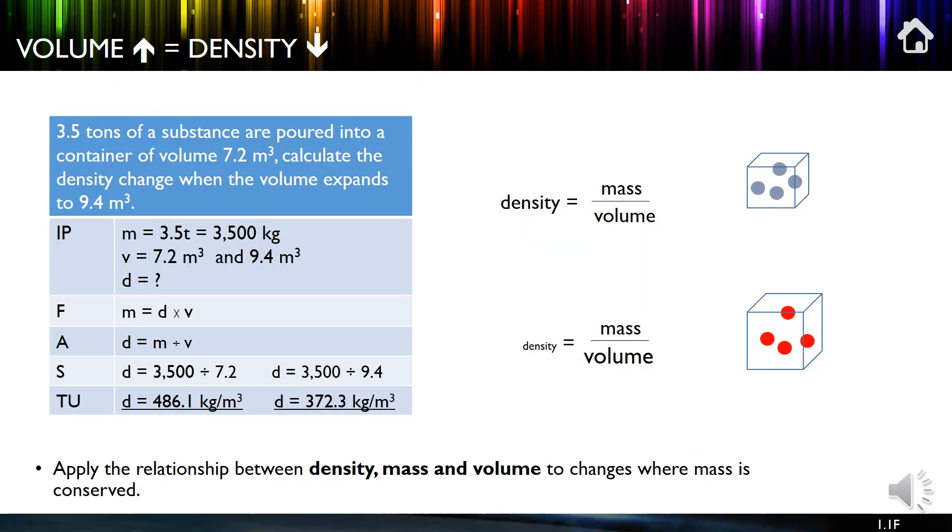So here we have a calculation example of calculating density. Remember: identify, adjust for prefix, formula, arrange, substitute, total, and put the unit in. So in this case, we have to adjust to make it kilograms, not tons. We have to rearrange our formula and we get our two densities.